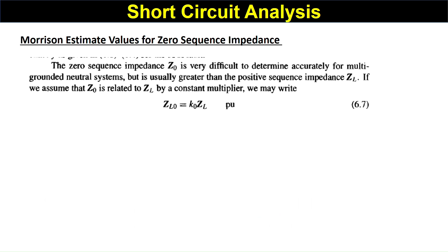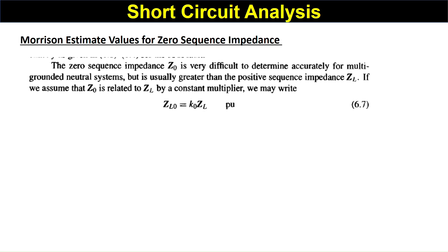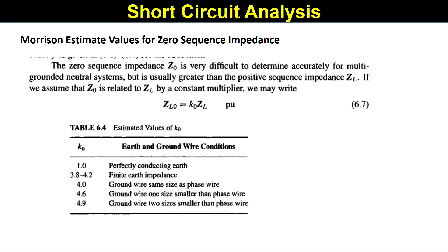For zero sequence impedance, according to the reference, Z0 is very difficult to determine accurately for multiple grounded neutral systems, but it is usually greater than the positive sequence impedance ZL. If we assume Z0 is related to ZL by a constant multiplier, we may write Z0 equals K0 times ZL. A table of estimated values of K0 is provided, and accordingly you calculate the zero sequence impedance.